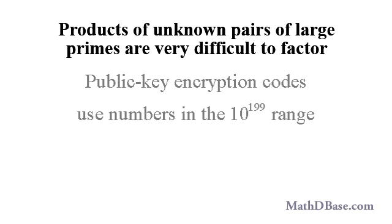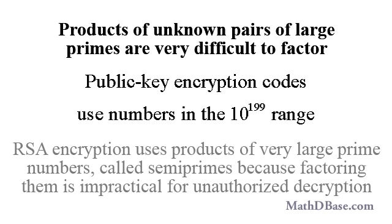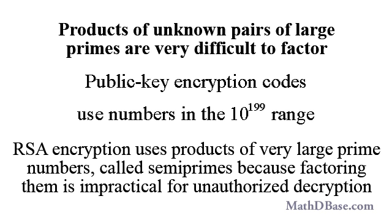Factoring large natural numbers is very important in the field of cryptography, the study and use of codes and ciphers, currently widely used to design computer security and software encryption systems. One of the more popular encryption schemes in use today is RSA, which is based on the product of two very large prime numbers. If the prime factors are kept secret, it will be very difficult, though not impossible, for a codebreaker or cracker to factor that product, known as a semi-prime number.